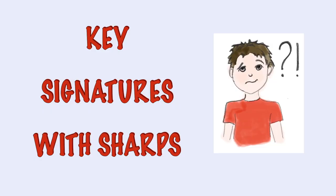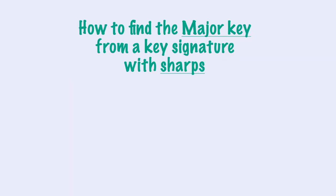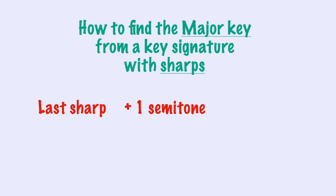To identify the key chord from a key signature, we need to remember two small rules — one for the sharps and one for the flats. If we have a key signature with sharps, we take the last one and raise it up by a semitone, and that is the major key.